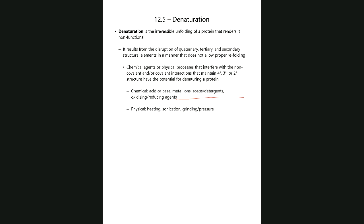What occurs during denaturation is that all the structural elements maintaining the protein's three-dimensional shape are tampered with and disrupted so that the protein cannot come back and cannot perform its function. We're talking about quaternary, tertiary, and secondary structural elements. Denaturation does not involve the destruction of the primary sequence — that technically remains intact. It's simply that the original three-dimensional shape is no longer attainable.